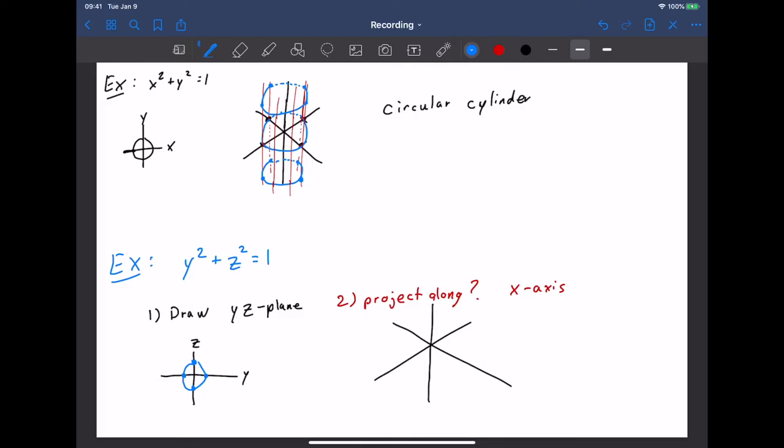So what do we do? My YZ plane gives me this. And my circle will look a little distorted here. But that's a circle along the YZ plane. And here's X. So what do we do next? We're going to draw some rulings through those key points parallel to the X axis.